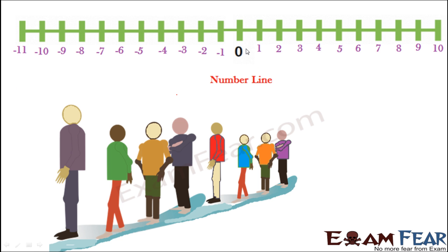As you can see on the screen, you have 0 at the center. On the right side, you have all the positive numbers: 1, 2, 3, 4 and so on. On the left side, you have all the negative numbers: minus 1, minus 2, minus 3 and so on.